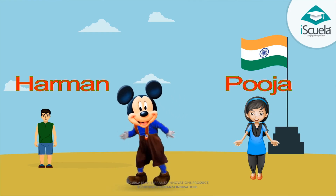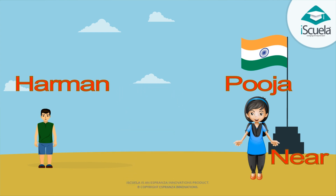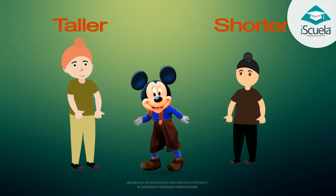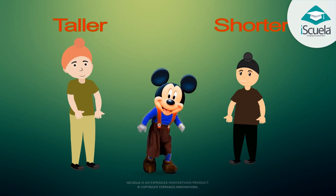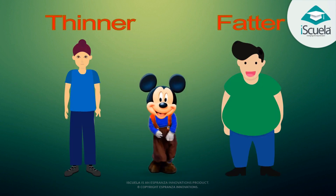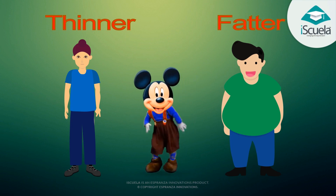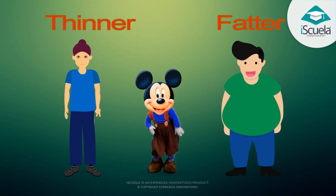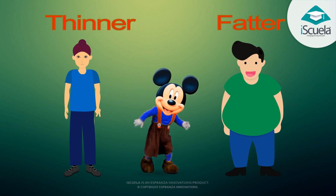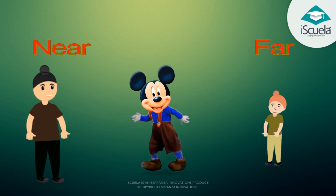Who is standing near the flag and who is standing far? Someone is taller than me. Someone is shorter. Someone is thinner and lighter than me. Someone is fat and heavier. Someone is standing far from me. Someone is standing near.